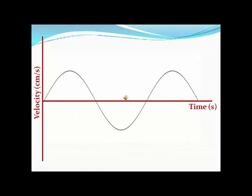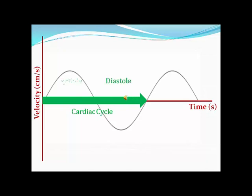One complete cardiac cycle contains two components: diastole, which is relaxation and filling, and systole, the contraction of the heart.